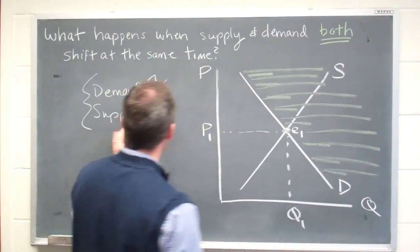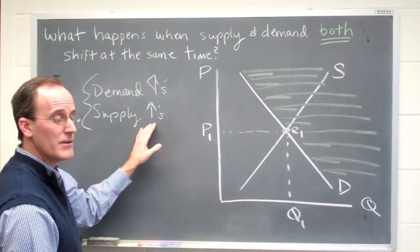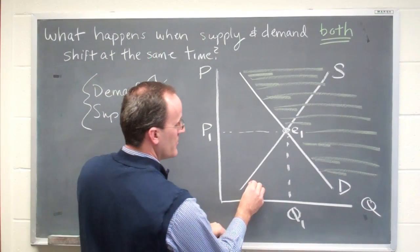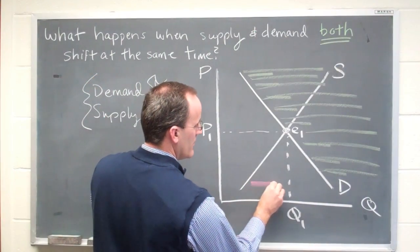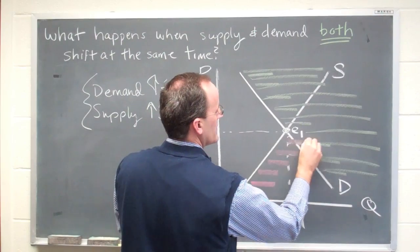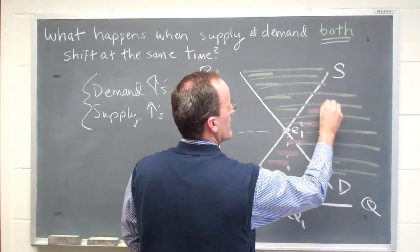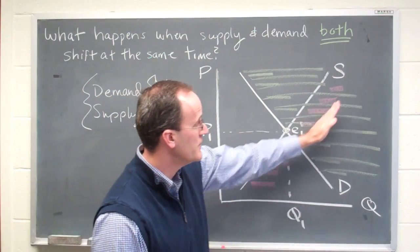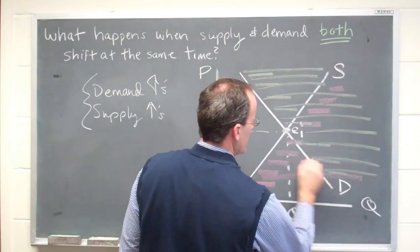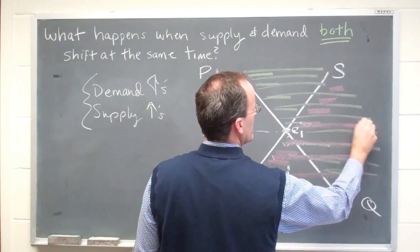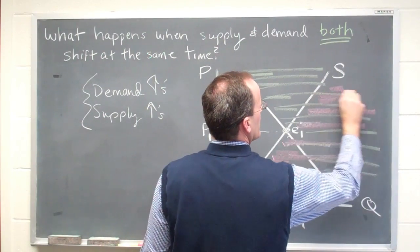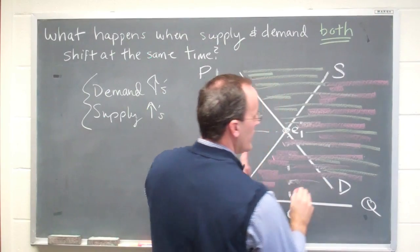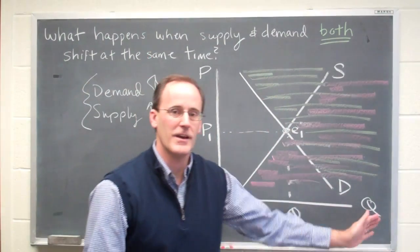The second thing we're told is that the supply curve increases. So let's do the same thing with that — the supply curve shifts. But once again, we're not told whether the shift is small or the shift is big. So the supply curve also moves out along the quantity axis.